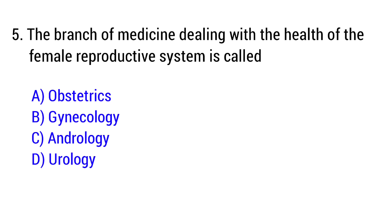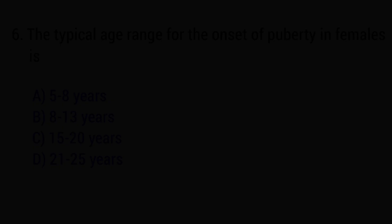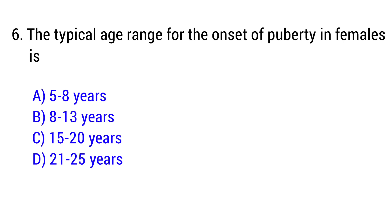Question number 5: The branch of medicine dealing with the health of the female reproductive system is called — the right answer is Option B: Gynecology. Question number 6: The typical age range for the onset of puberty in females is — the right answer is Option B: 8 to 13 years.